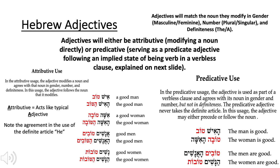Hebrew adjectives have the same endings as Hebrew nouns. In the attributive sense, they will agree with the noun in all aspects: gender, number, and definiteness. So ish tov is 'a good man.' If, however, it is a predicative use — 'the man is good' — the predicate will not agree with the noun in definiteness, only in gender and number.